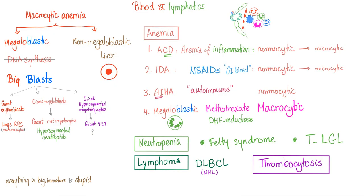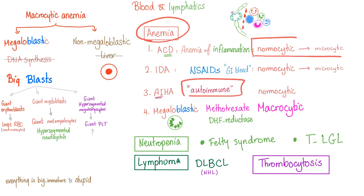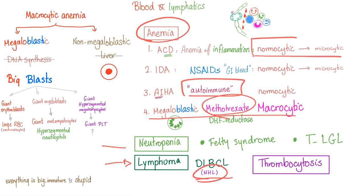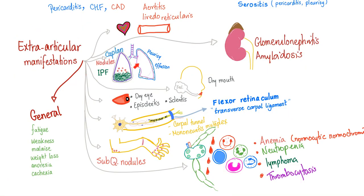Hematological abnormalities include anemia — the most common subtype is normocytic normochromic, but autoimmune hemolytic anemia can also occur, and megaloblastic anemia can result from methotrexate use. Neutropenia is common, and lymphoma can develop — specifically diffuse large B-cell lymphoma, a non-Hodgkin's lymphoma. A visual illustration of all extra-articular manifestations is provided as a summary.